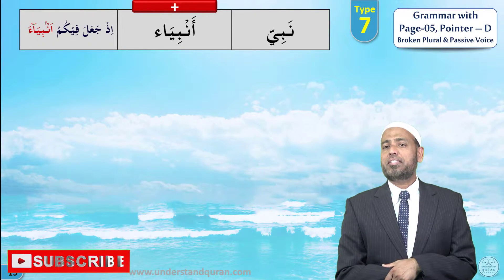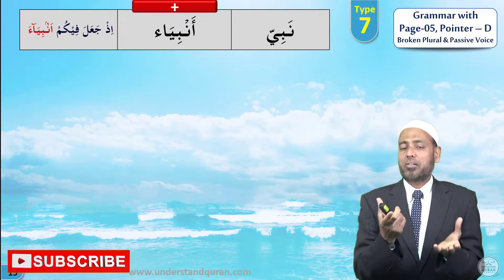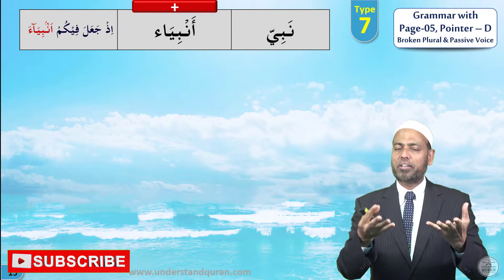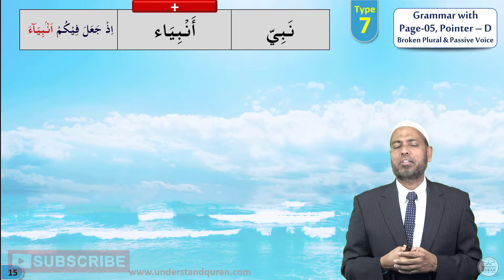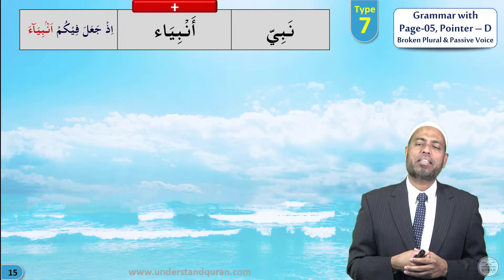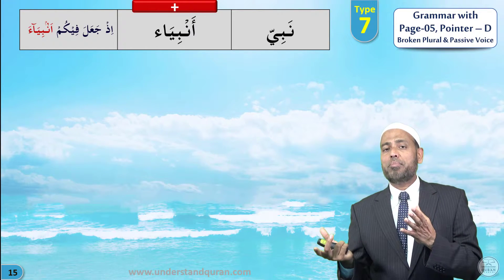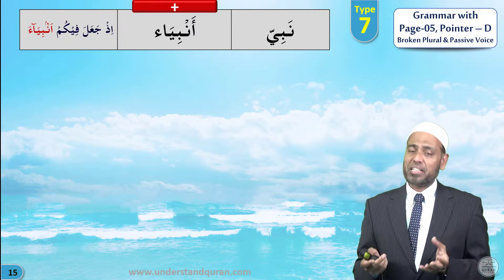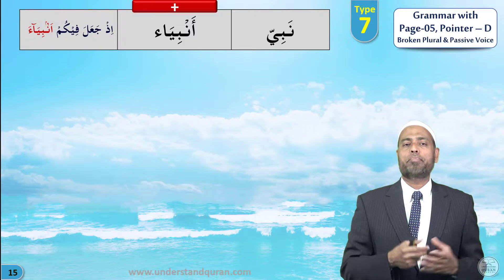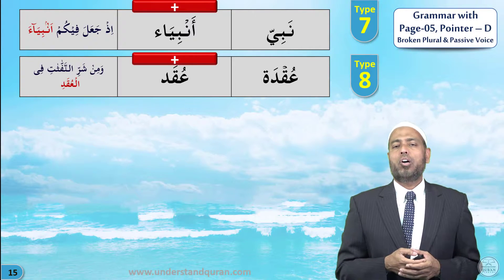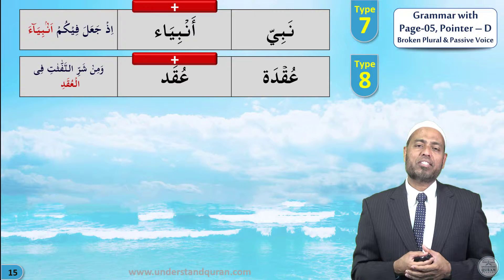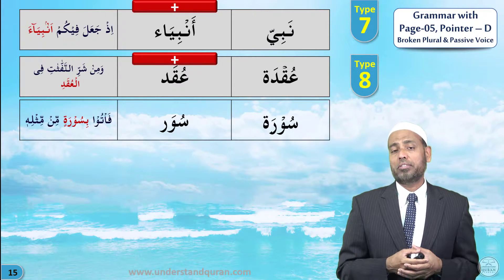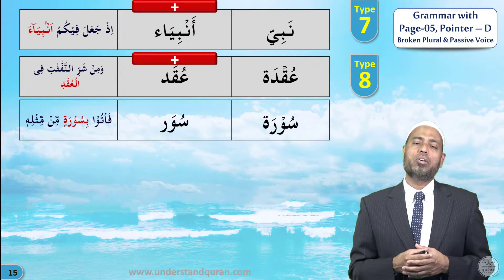Let's take the seventh type — though the ordering is for convenience, not a strict classification. The pattern follows nabi; plural is anbiya'. Note that the plural of nabi can also be nabiyyun or nabiyyin, and also anbiya'. 'Uqda means knot; plural is 'uqad — wa min sharrin-naffathati fil-'uqad. Sura means chapter of the Quran; plural is suwar.